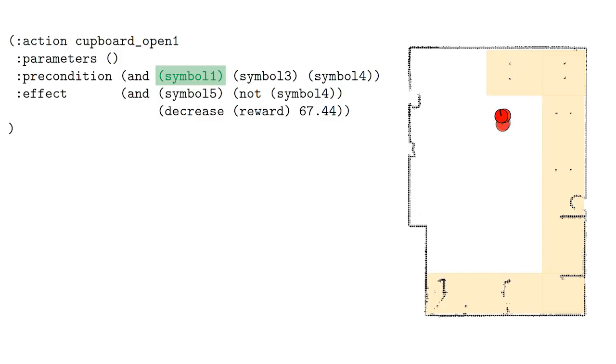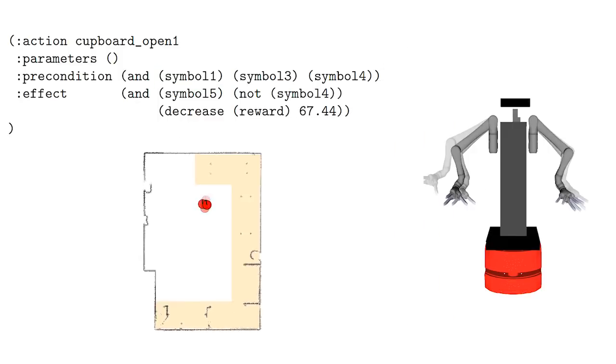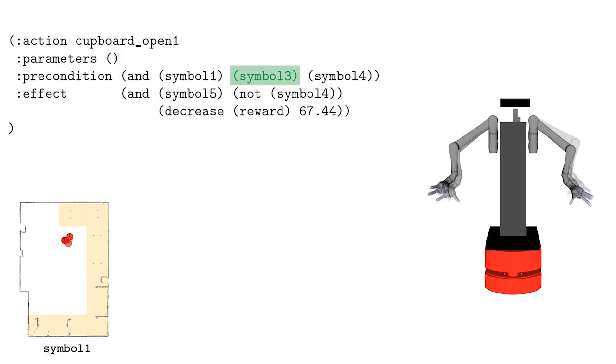Symbol 1 refers to a distribution over Anna's position in the map. Visualizing samples from that distribution indicates that she'd be standing in front of the cupboard. Symbol 3 refers to her joint positions. Recall that her left arm is raised when she's holding the bottle. Symbol 3 can therefore be interpreted as her not holding anything.